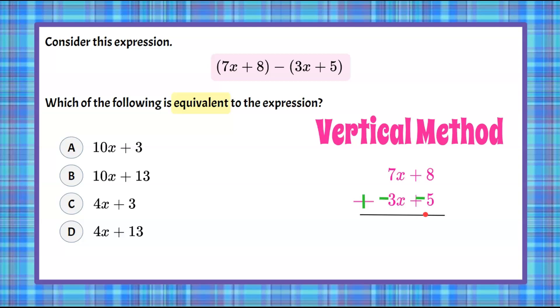So the common misconception here is students forget to subtract the second, the constants. So 7x subtract 3x, and then 8 subtract 5 is 3, positive 3. And 7 subtract 3x is 4x. And our simplified expression is 4x plus 3, which is equivalent to this given expression. We've combined the like terms. So we can see that that is answer choice C.